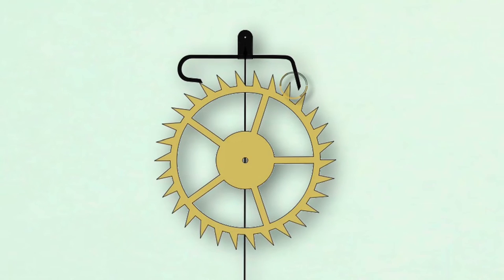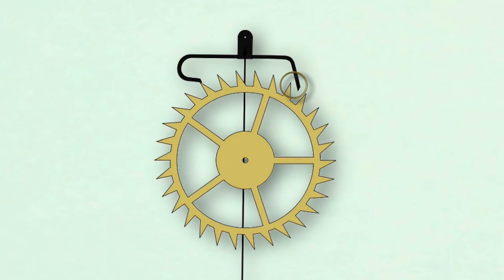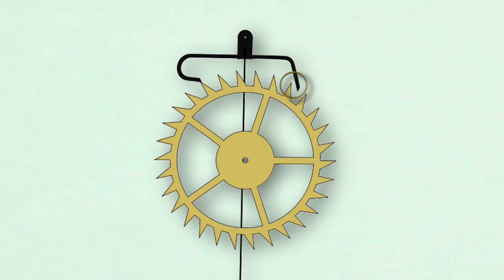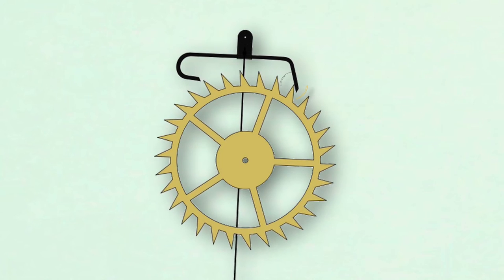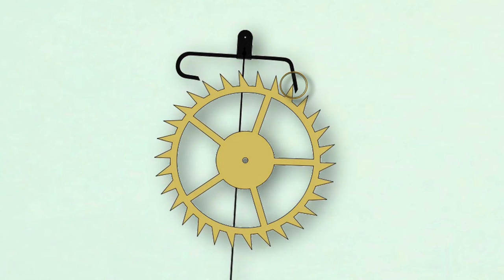When the impulse phase is complete and the escape wheel tooth reaches the end of the pallet, there's a small gap between the pallet on the opposite side of the anchor and the new tooth that is ready to strike it. This gap is called the drop. The tooth giving impulse slides off its pallet, and the escape wheel moves rapidly to jump the gap, and the new tooth drops onto the opposite pallet.